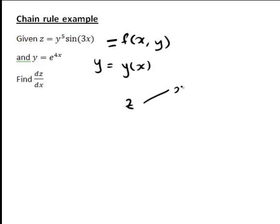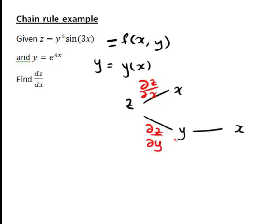So z is expressed in terms of two variables, x and y, and in turn y is expressed in terms of one variable, x. And that means at this first step, we're going to need to calculate the partial derivative ∂z/∂x, since z is in terms of x and another variable y. And similarly, we're going to be using the partial derivative ∂z/∂y here.